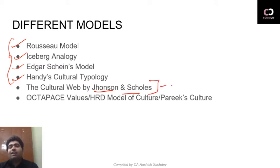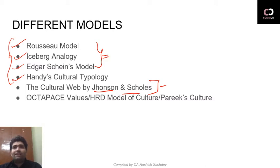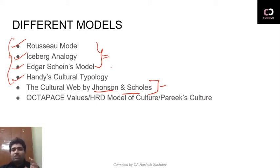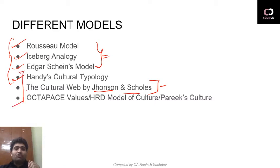In the last video, I made it clear that the previous three models were basically telling us the characteristics of an organization on the basis of various factors that form part of that organizational culture. There are certain things present in any organization on the basis of which we can understand its culture.